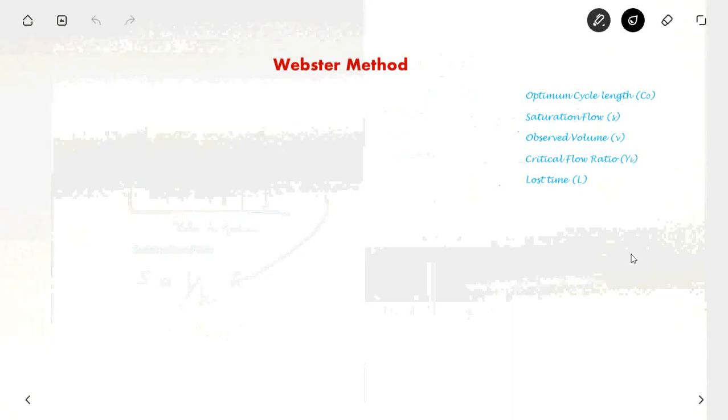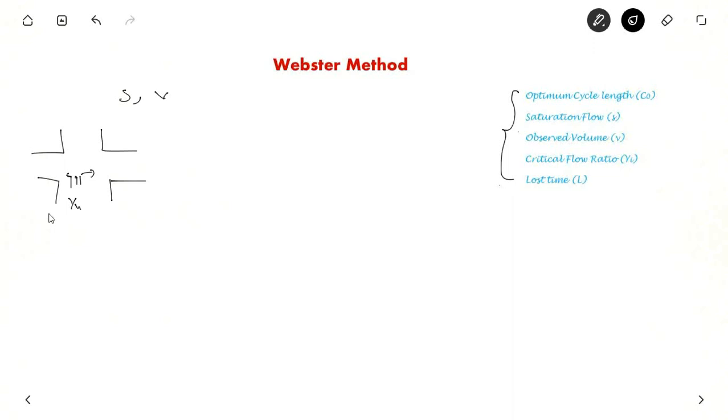Now we will move on to the Webster method. So these are the important terms associated with Webster method. Saturation flow for this phase will be 1 by H. And volume is the volume which you observe on the road.